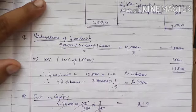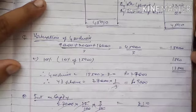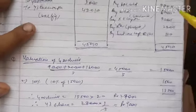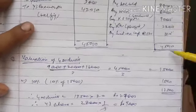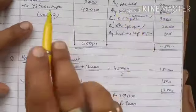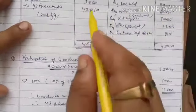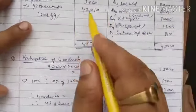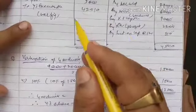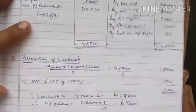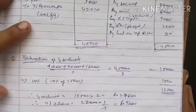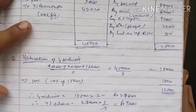Then we calculate interest on capital till the date of Y's death, post the entries, and account for the share of goodwill. After all deductions, this gives us the final answer. I hope children you have understood. We will be meeting in the next video. Thank you, take care.